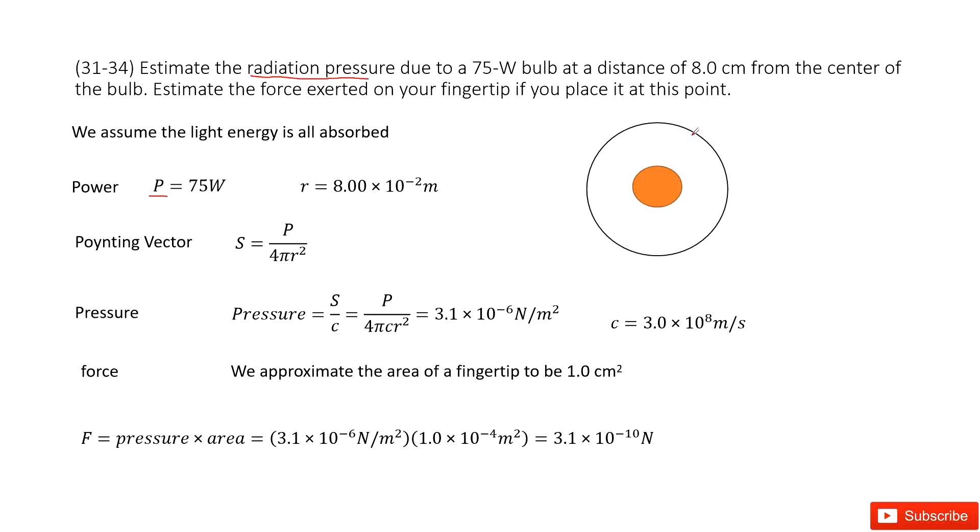And then, so the pointing vector can be written as power divided by the cross-sectional areas. This is the spherical areas. So spherical surface, 4 pi R squared.